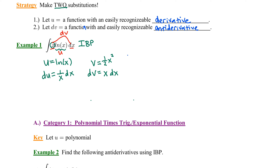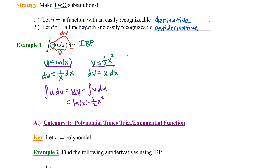Now let's put it all together with the integration by parts formula: integral of u dv equals uv minus the integral of v du. U is natural log of x, and v is one-half x squared. So we have u times v, then subtract the integral of v — which is one-half x squared — times du, which is 1/x dx. We are assimilating these parts according to the formula.